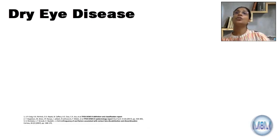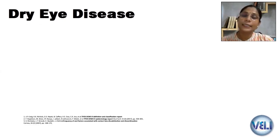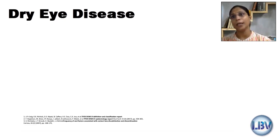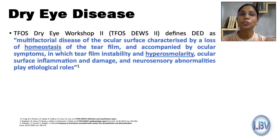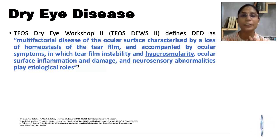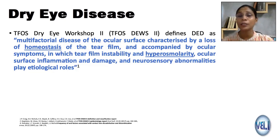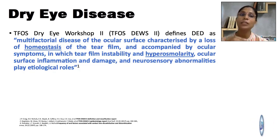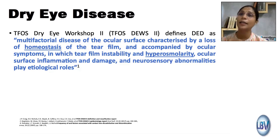We need to understand the pathophysiology of dry eye disease first. The TFOS website has detailed reports on the DEWS workshop. From the TFOS Dry Eye Workshop 2, dry eye is defined as a multifactorial disease of the ocular surface characterized by a loss of homeostasis — meaning the balance between tear production and evaporation is disrupted — accompanied by ocular symptoms.